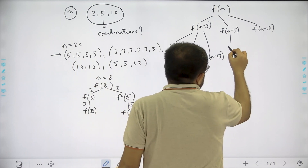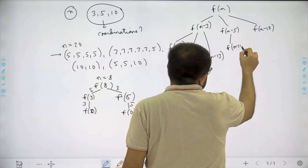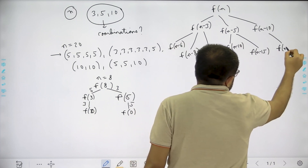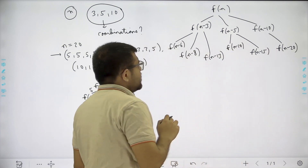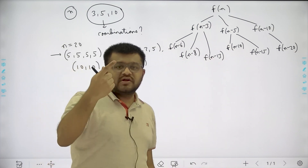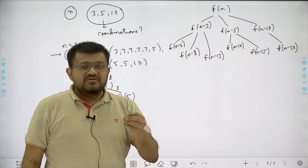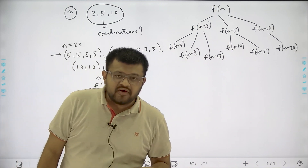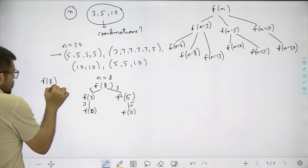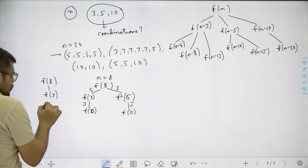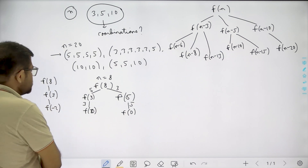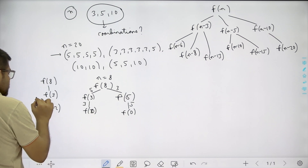Continuing down the tree, I can take another coin of 5, giving f(n-10), or a coin of 10, giving f(n-15), or f(n-20) and so on. Whenever we reach a negative value, we return 0 — there is no possible combination. For example, for f(8), if I took 5 it became f(3), then I took another 5, it became f(-2), which is negative. So I return 0 and stop that recursion branch.